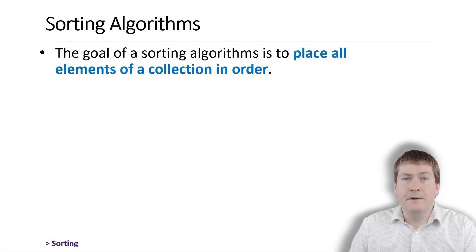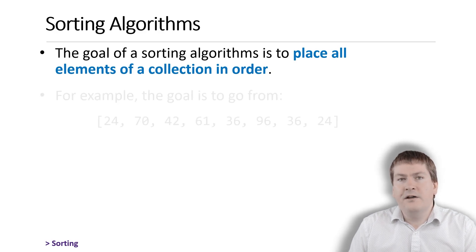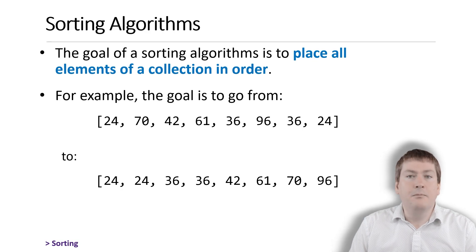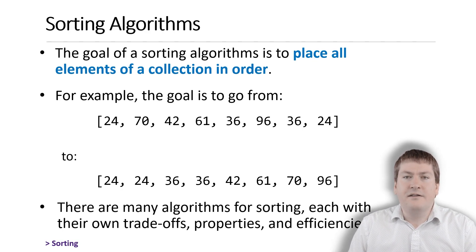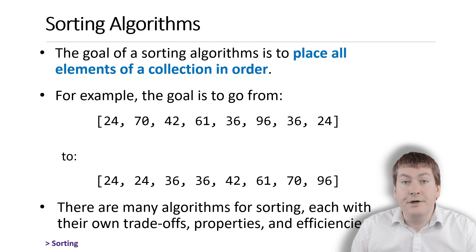The goal of sorting algorithms is to place all elements of a collection in order. For example, if we have a list of numbers, the goal might be to sort the numbers from lowest value to largest value. While this seems like a simple task, how you accomplish this task has significant implications in terms of how your program is going to perform.